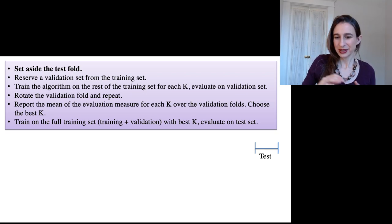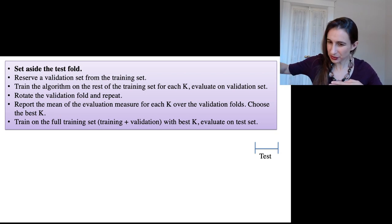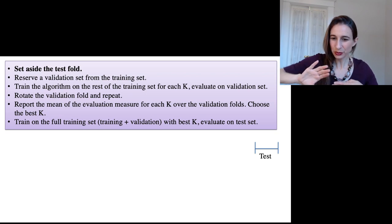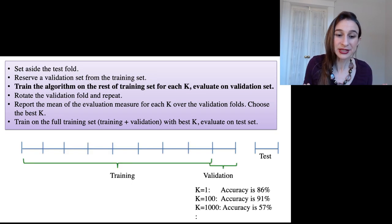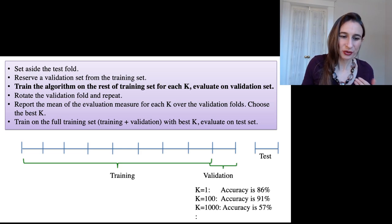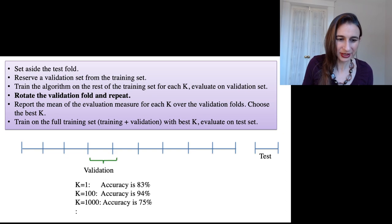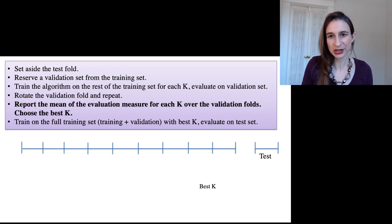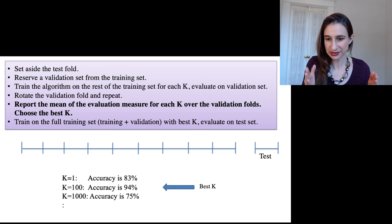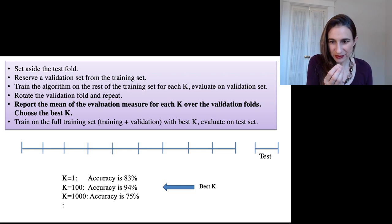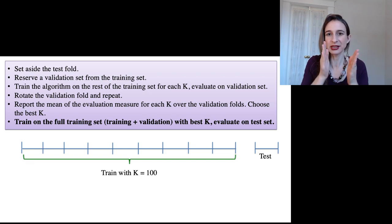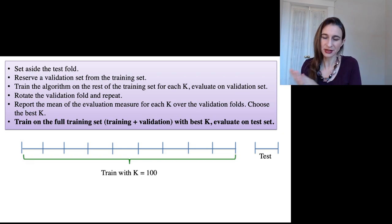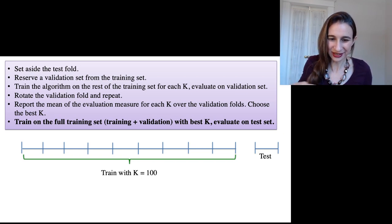To build the final model: you either have a test set or assume you'll get test data in the future, so set that aside and don't touch it. To tune the parameter, reserve a validation set from the training set, train the algorithm on the rest for each k, evaluate on the validation set, rotate the validation fold, and repeat. Report the mean of the evaluation measure for each k over the validation folds and choose the best k. Then train on the full training set — training and validation combined — with that best k. That is your final model, which you use on the test set or any future test data.